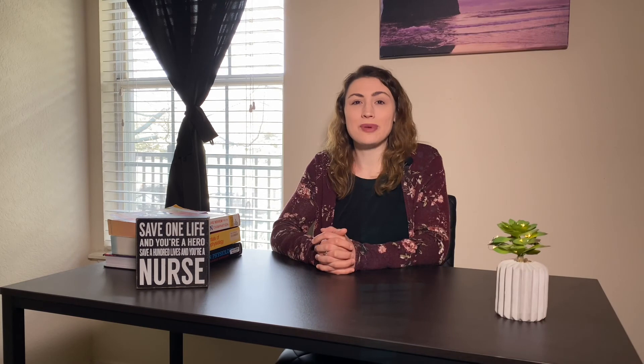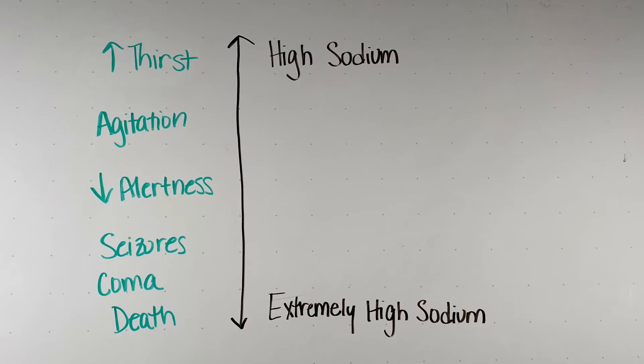The signs and symptoms of hypernatremia are due to cellular dehydration — water leaving the cells — and the role sodium plays in action potentials. In the brain, cellular dehydration causes a progression of neurologic signs: initially thirst, then as sodium increases, the patient becomes agitated and has decreased alertness. As sodium continues to rise, seizures may occur, and at extremely high levels the patient may be comatose, and death may occur.